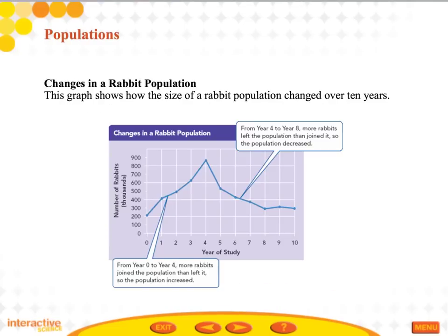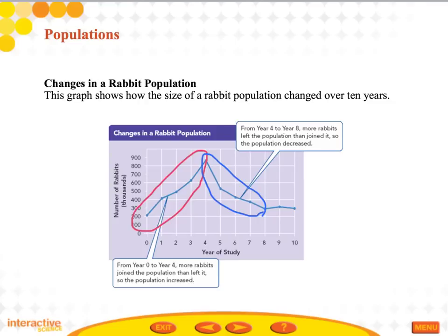Another way to show population change is a line graph — here showing a rabbit population changing over a 10-year period. From years 0 to 4, rabbits had an increase in population, likely due to more births than deaths or rabbits moving into the area. From years 4 to 8, the population decreased, possibly due to more predators, habitat change, or a heavy frost limiting food. From years 8 to 10, it stayed pretty steady.